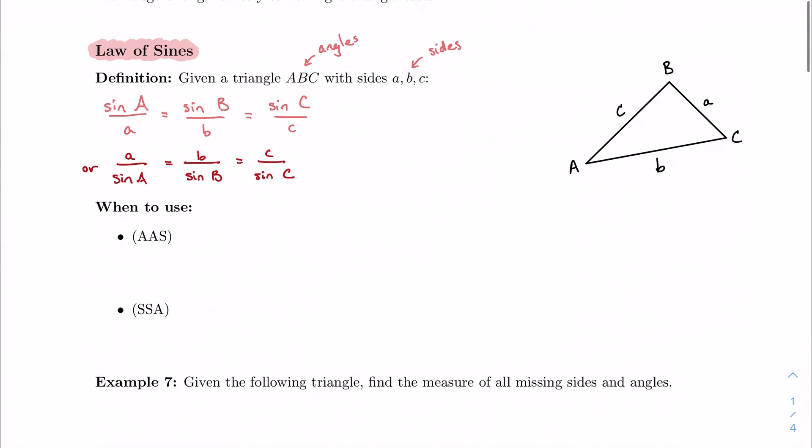The way that we're going to use this is one of two cases. I'm either going to be given what we call angle angle side, and this is where I have two angles and one side, usually an opposite side, but it doesn't have to be.